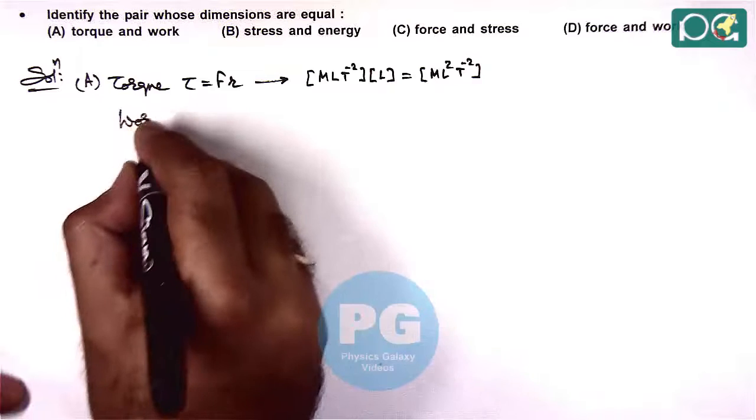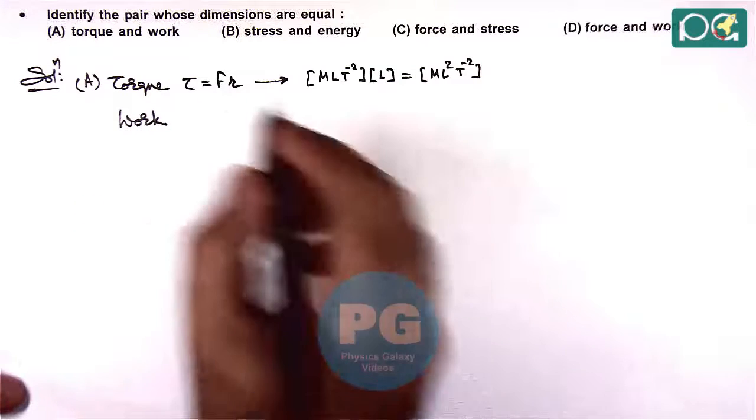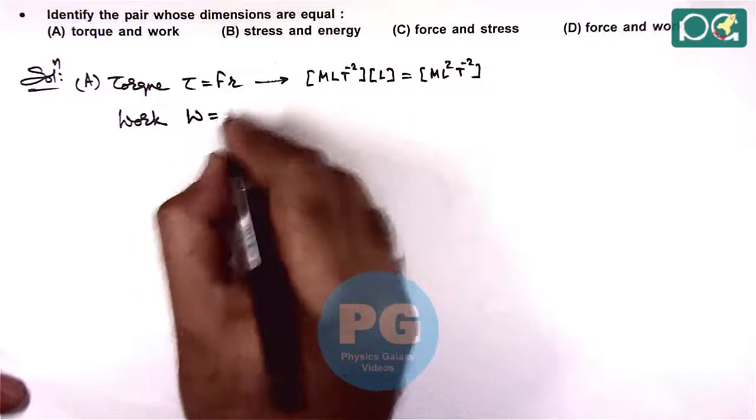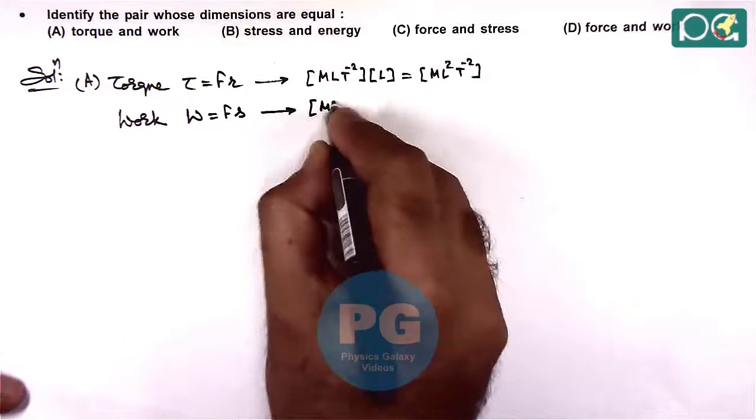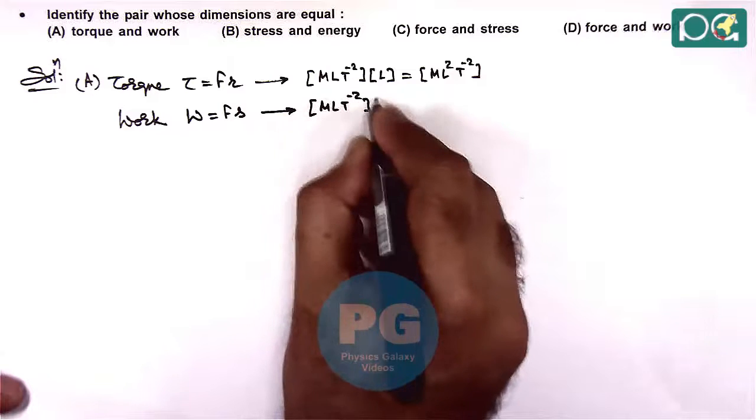And if we check with the work, dimension of work is that of energy, or we can check it with force multiplied by displacement. So here also the dimension we are getting is same.